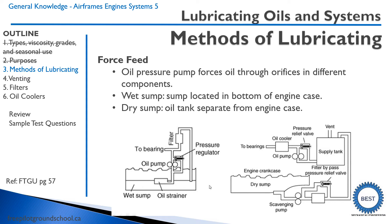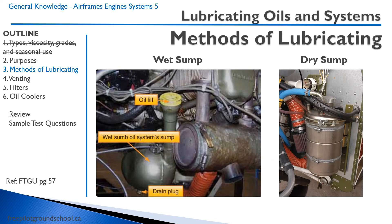On the left is an example of a wet sump — this looks like a Cessna 150. You can see it's just a tank with a filler cap and everything sits in there. On the right is a dry sump — an oil tank connected to the firewall that will always supply oil to the engine no matter what attitude you're in.